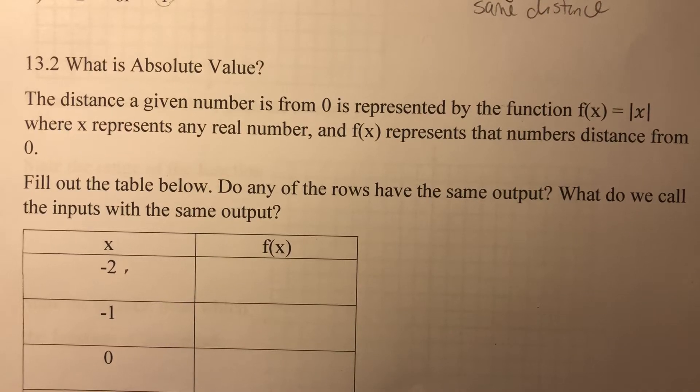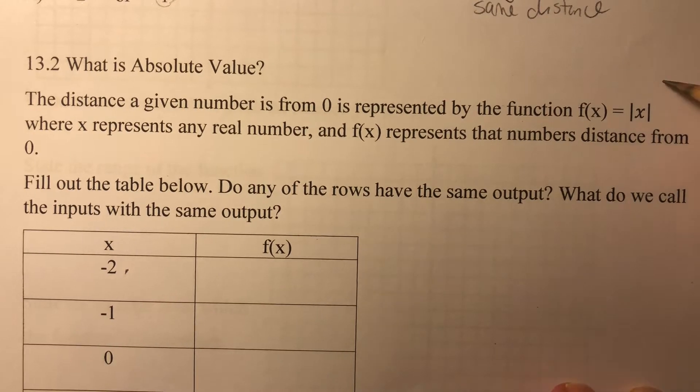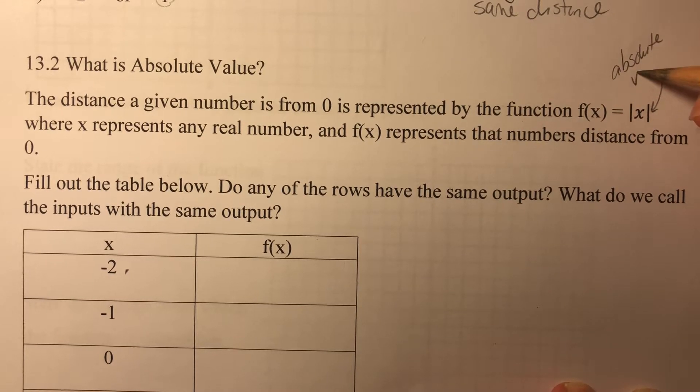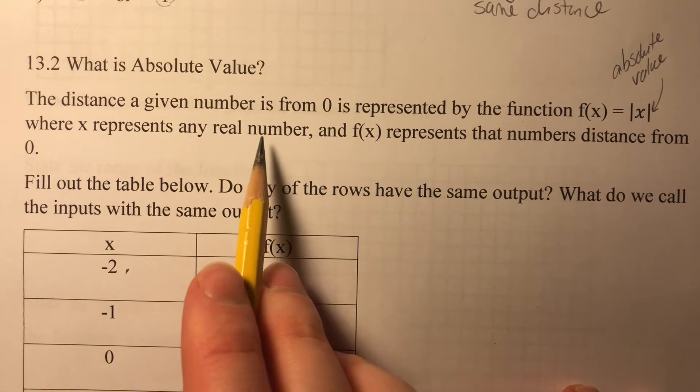13.2: What is absolute value? The distance a given number is from zero is represented by the function f(x) equals the absolute value of x. Those two bars mean absolute value. X represents any real number.